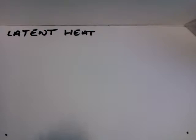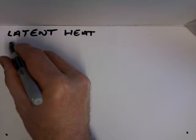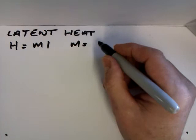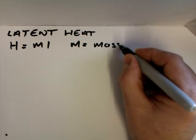So now we're looking at latent heat, and the formula for latent heat is H equals ML, where M equals mass of substance in kilograms.